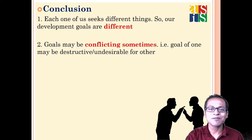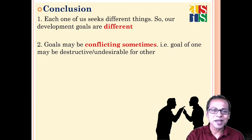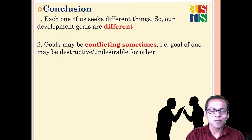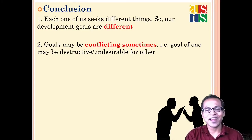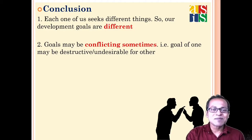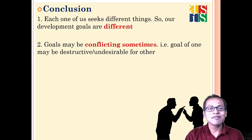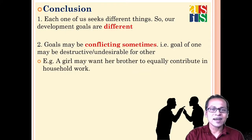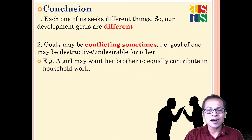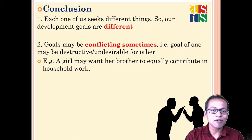For example, a teacher's goal may be to conduct an exam in offline mode, while a student's goal might be to avoid the exam or have it in online mode. So many times goals conflict with each other.